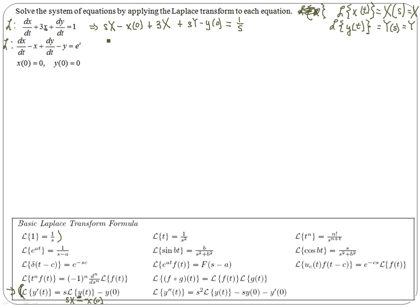You can simplify this by applying the initial values. Both of our initial values are zero: x(0) is zero, y(0) is zero. So I'm going to take this equation and combine my x terms. I have (s + 3)X + sY = 1/s.